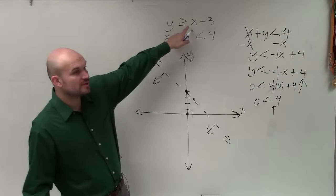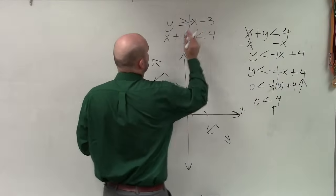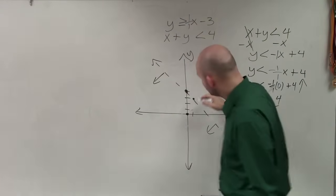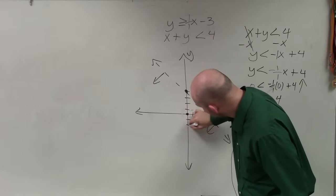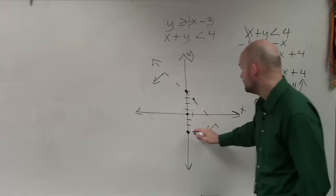Now we go ahead and graph this one. Well, this one's already in slope-intercept form, so it's a little bit easier. Again, notice that my slope as a fraction that can be rewritten as 1 over 1. So now my y-intercept is negative 3, so I go down negative 3, 1, 2, 3. And then my slope now is going to be up 1 over 1.